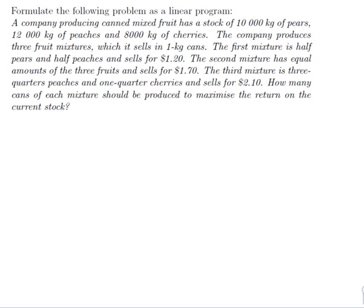Formulate the following problem as a linear program. A company producing canned mixed fruit has a stock of 10,000 kg of pears, 12,000 kg of peaches, and 8,000 kg of cherries. The company produces three fruit mixtures which it sells in 1 kg cans. The first mixture is half pears and half peaches and sells for $1.20. The second mixture has equal amounts of the three fruits and sells for $1.70. The third mixture is three-quarters peaches and one-quarter cherries and sells for $2.10. How many cans of each mixture should be produced to maximise the return on the current stock?